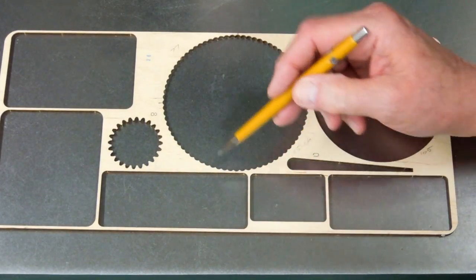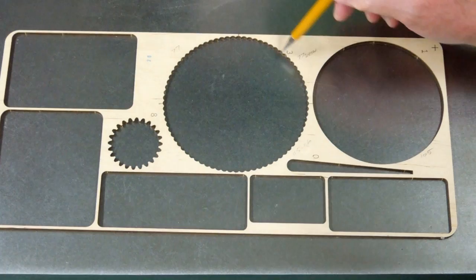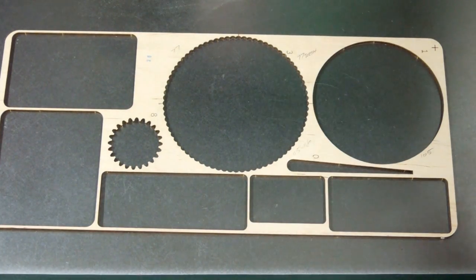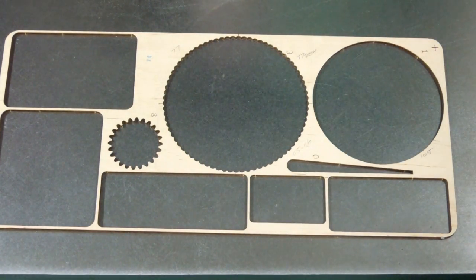I'm using this piece of scrap to duplicate the scallop pattern to match the outside of the ring gear on the mechanical flower.